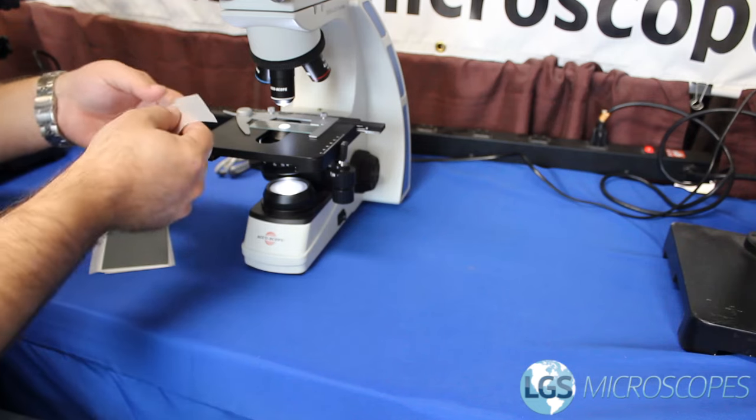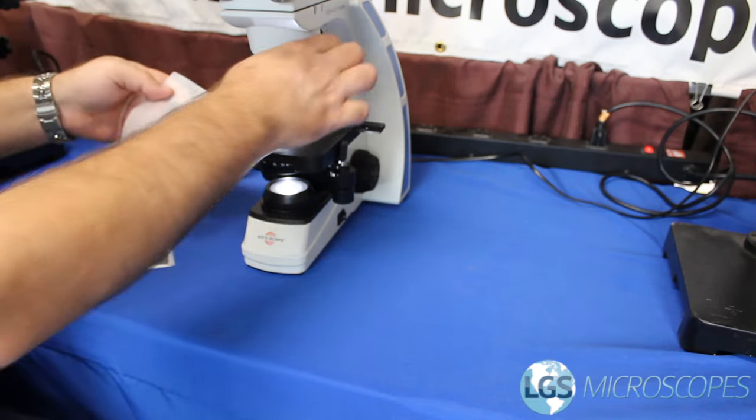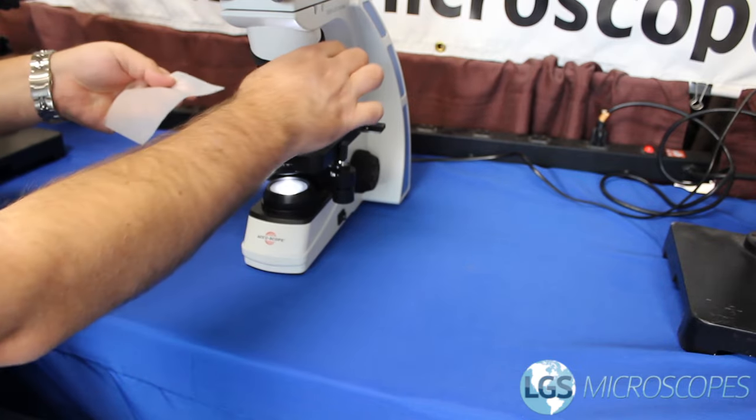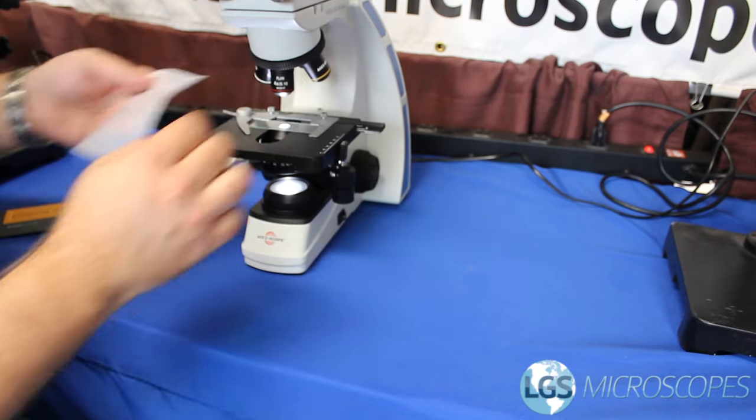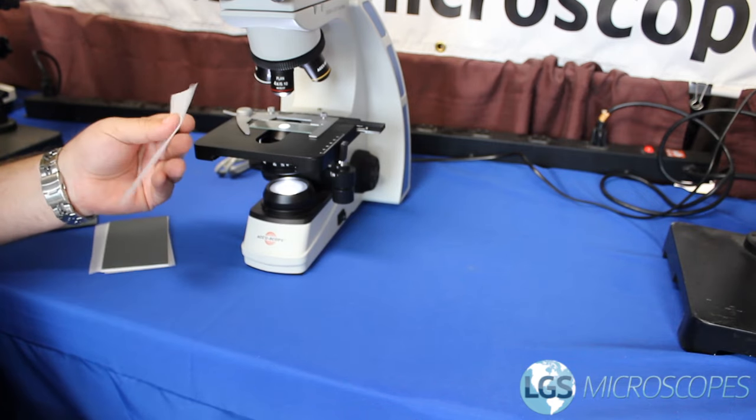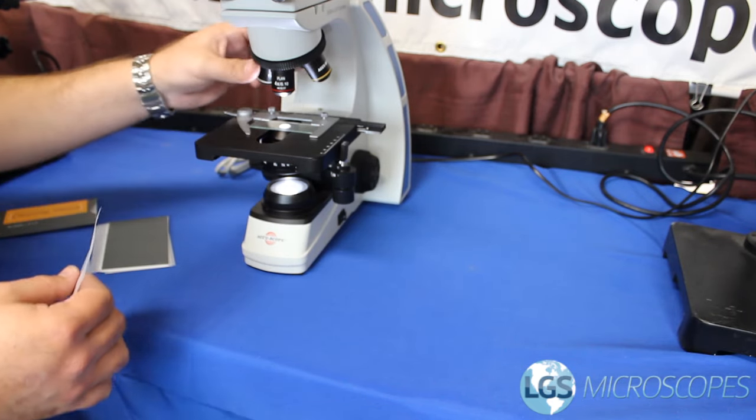There are a lot of videos and tutorials out there on how to use immersion oil but there's actually a lot of things that they tell you to do that's incorrect. For example they'll tell you to wipe off your 100x objective, then your 40x, then your 10, and then your 4. And really all that's done is just share the oil all over all of the objectives.